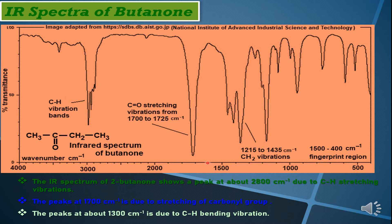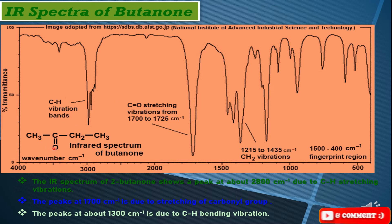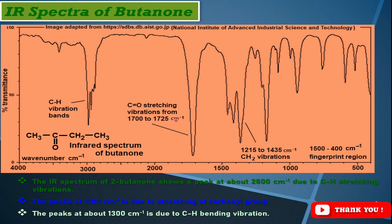As we read in the previous lecture, the ketone carbonyl peak can vary from 1700 to 1725 cm⁻¹. You can see this single peak here — this is the C=O stretching vibration, which is a very prominent peak in this region, and it is a clear indication that a carbonyl group is present in the molecule.